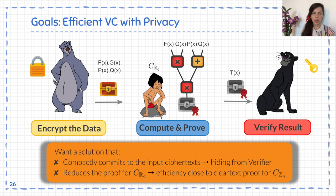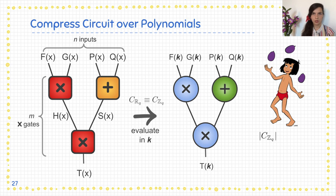So we aim for a solution that will compactly commit to the input ciphertexts — in this way we will hide the ciphertexts from the verifier who has the decryption key, so the inputs will stay private. We would like to reduce the overhead of computing over polynomials into something close to proving computation over clear text. To do so, we find a way to compress polynomial circuits by using an isomorphic property of polynomial evaluations. We map the circuit on the left to a circuit over scalars by simply evaluating all the input polynomials at a random point k, obtaining scalars which are the evaluation results.